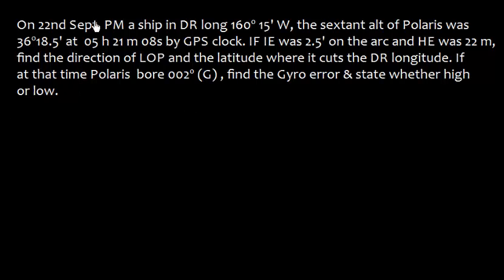Let's understand this problem. On 22nd September PM, a ship in DR longitude with no DR latitude given, the sextant altitude of Polaris was observed. The time is given by GPS clock. Index error was 2.5 minutes on the arc and height of eye was 22 meters.